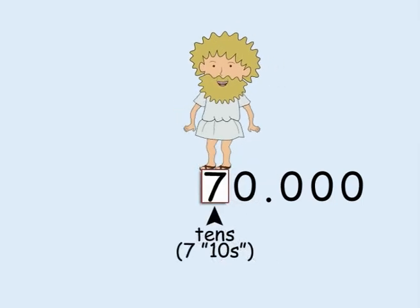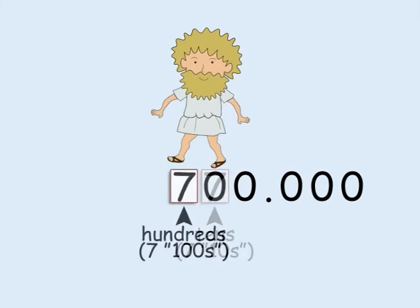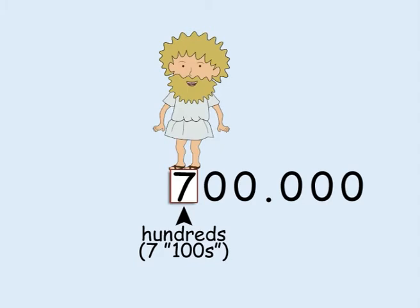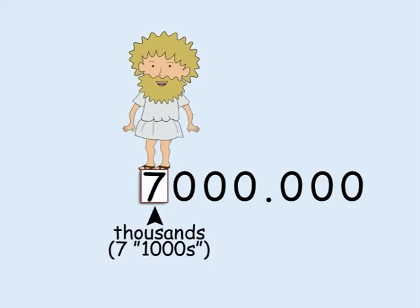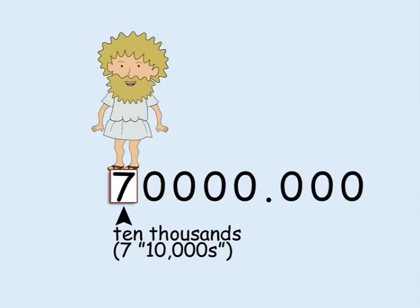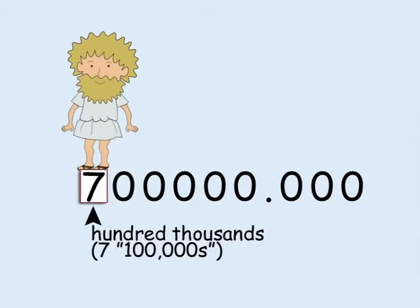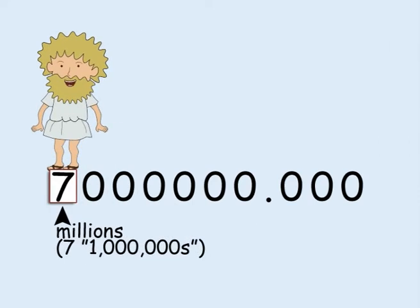The position two places to the left of the decimal point tells you how many tens there are. The position three places to the left tells you how many hundreds there are. The position four places to the left tells you how many thousands there are. After that come the ten thousands, the hundred thousands, and then the millions.